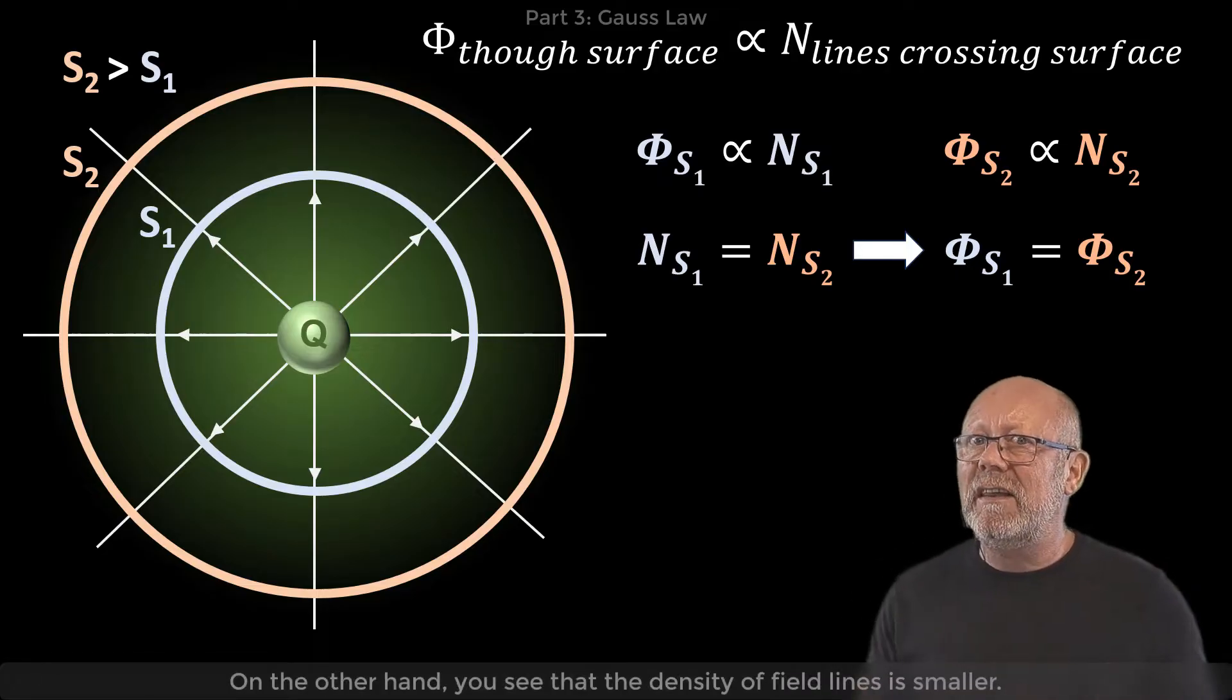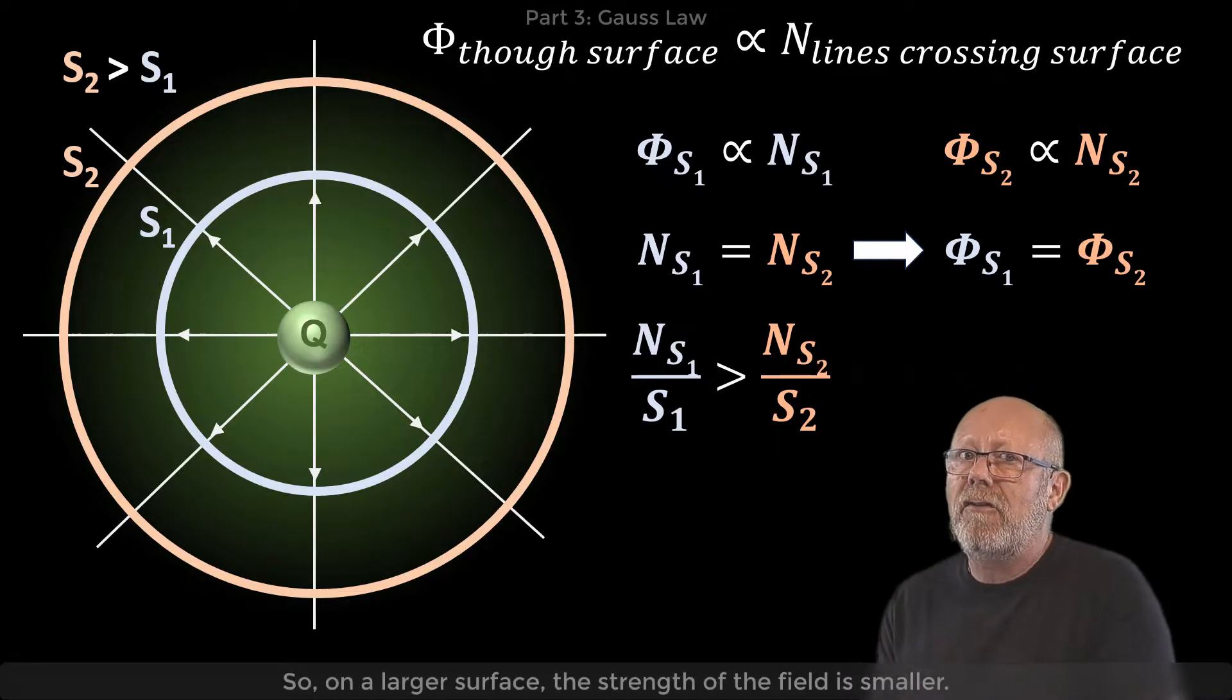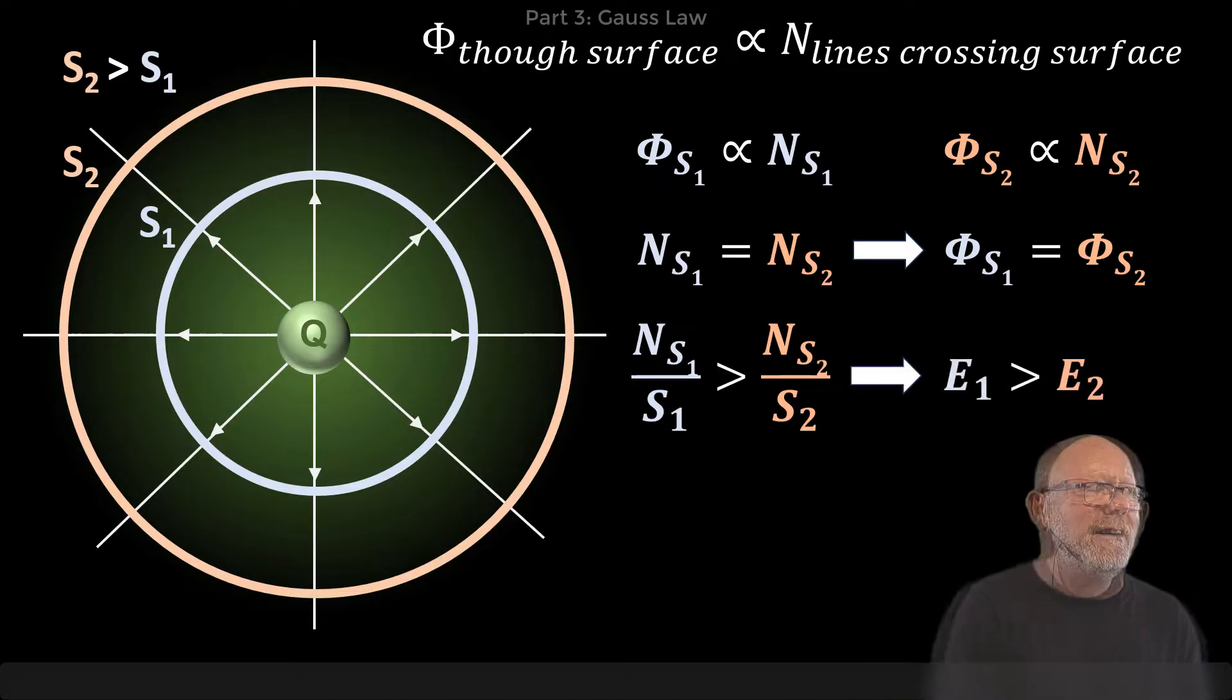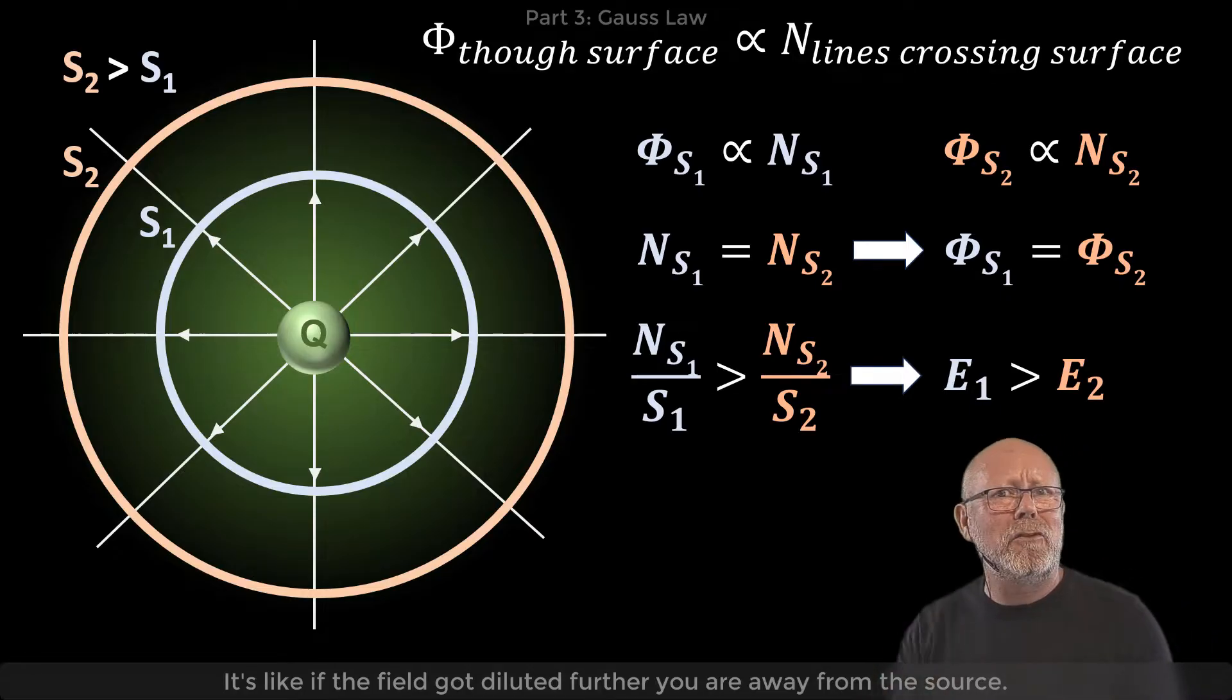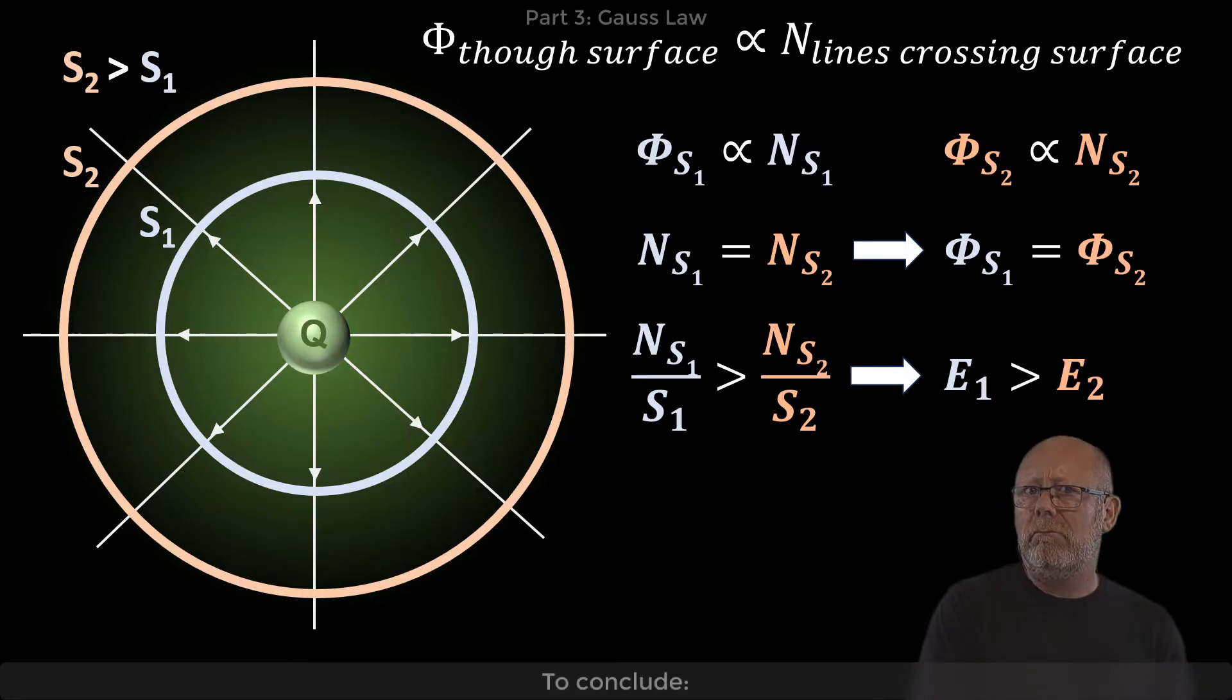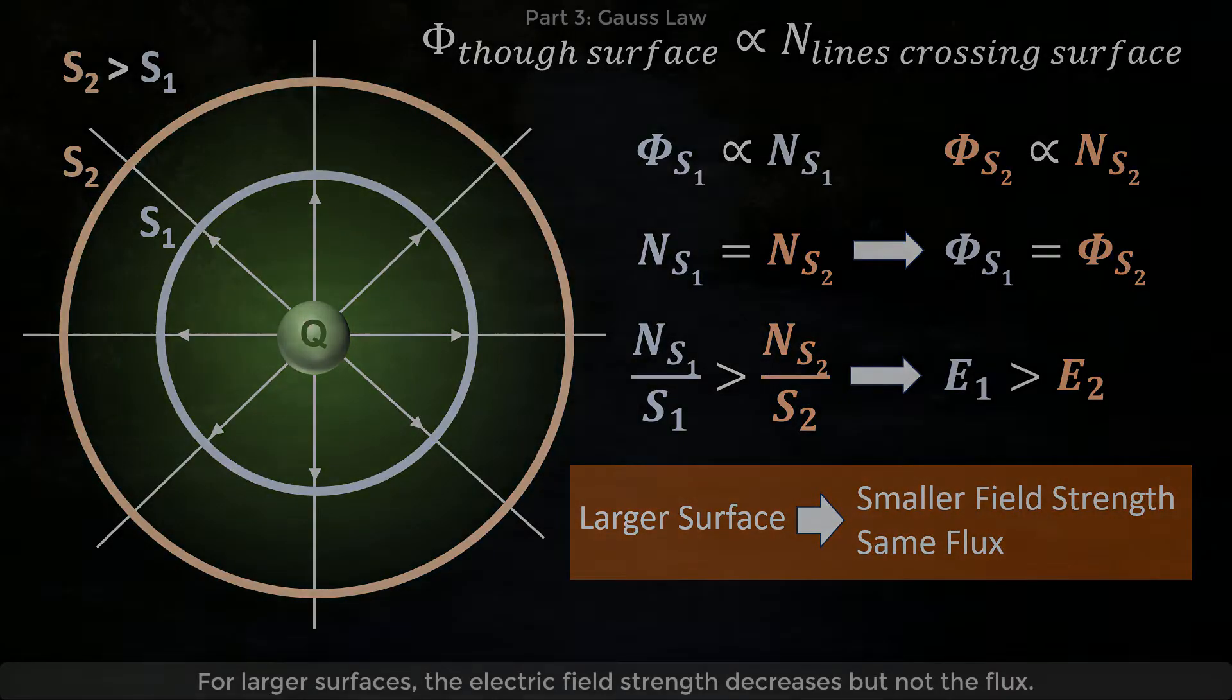On the other hand, you see that the density of field lines is smaller. So on a larger surface, the strength of the field is smaller. It's like if the field got diluted the further you are away from the source. To conclude, for larger surfaces, the electric field strength decreases, but not the flux.